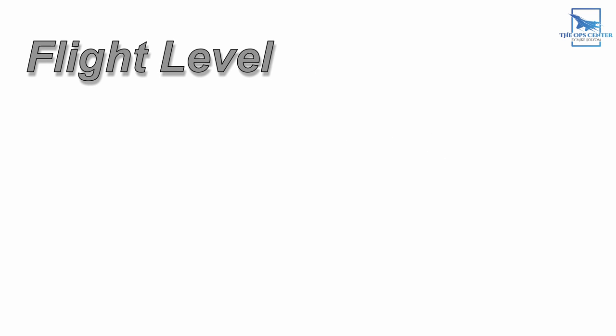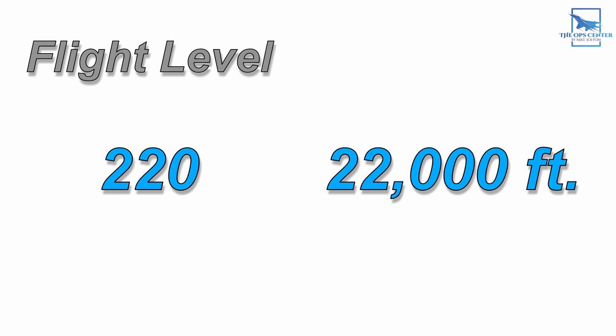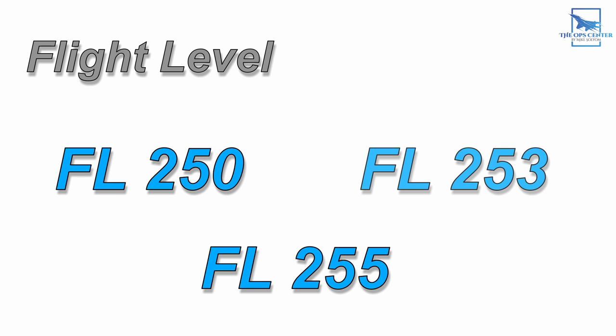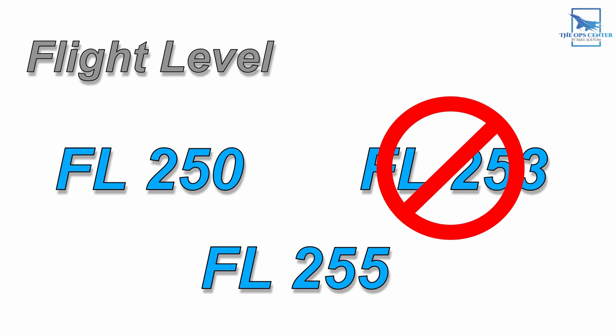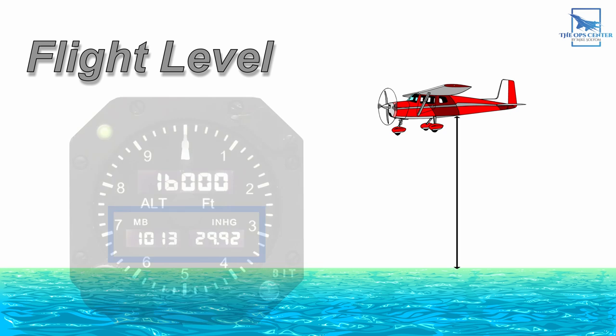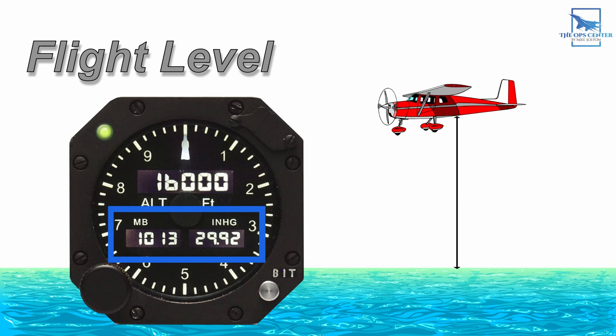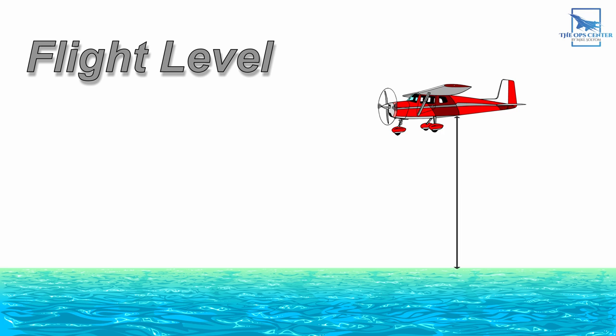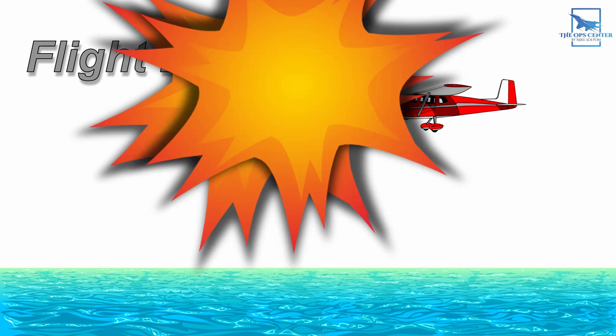Flight level is an altitude given in multiples of 100 feet, so a flight level of 220 would be 22,000 feet. Flight levels are usually only given in numbers that are divisible by 500, so you would hear FL 250 or FL 255, but you shouldn't ever expect to hear FL 253. Whenever using flight levels, altitude will be in reference to sea level at a standard atmosphere setting, so a QNH setting of 1,013 millibars will be dialed into the altimeter. This is important because if an air traffic controller is trying to deconflict aircraft by altitude, all aircraft need to be using the same reference to keep from accidentally entering another plane's altitude block.